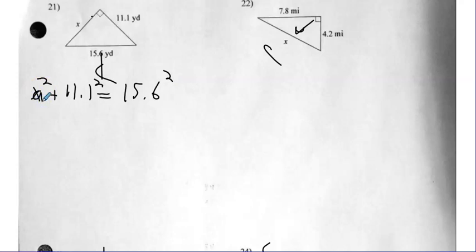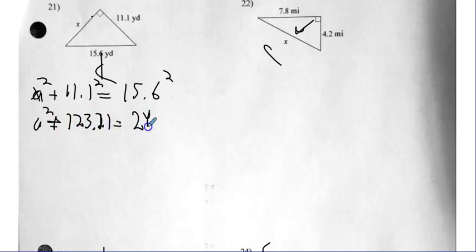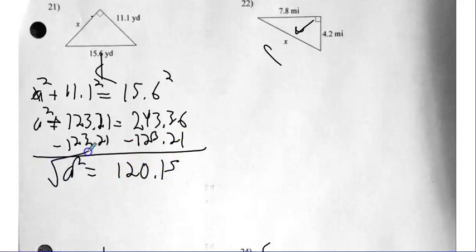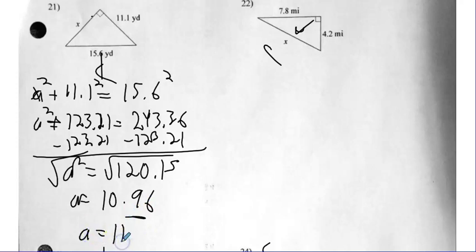Number twenty-one — A squared plus B squared equals C squared. So A squared plus 123.21 equals 243.36. Just put those in the calculator. Then we subtract 123.21 from both sides. That means A squared equals 120.15. If we square root both sides, we get A equals 10.96. Now, the directions say to round to the nearest tenth. That nine has to round up. So this is one of those circumstances where the answer is 11.0.